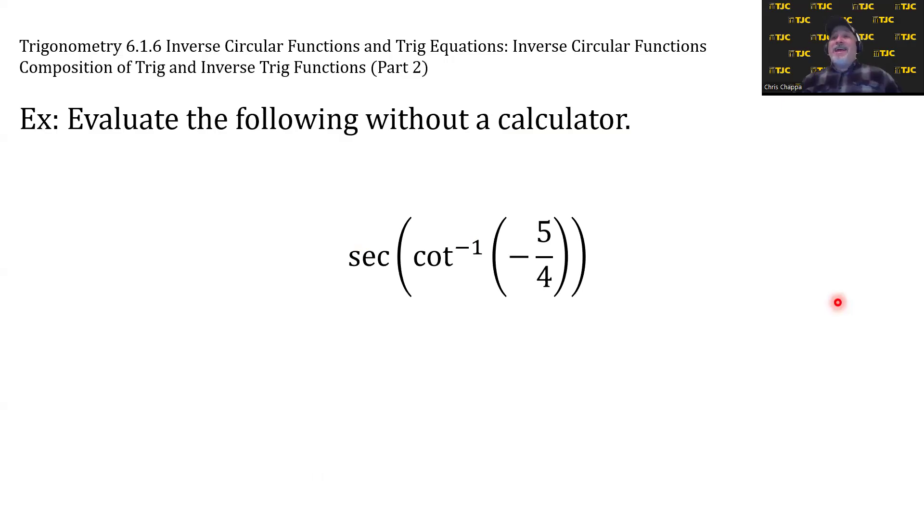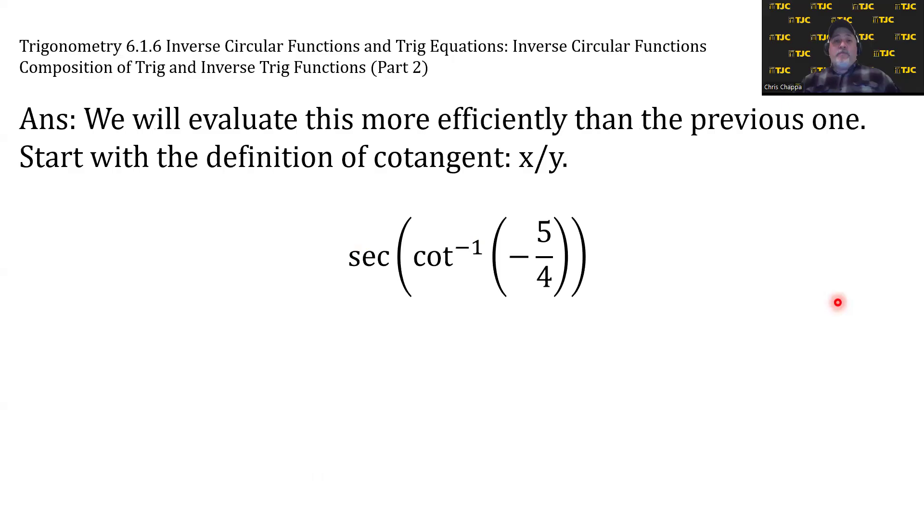Secant of cotangent inverse of negative 5 fourths. Now we have to pay attention to the quadrants. Why? Because when we disassemble the 5 fourths using the definition of cotangent, we have to determine who gets the negative, the 5 or the 4. Now, we will evaluate this more efficiently. Start with the definition of cotangent. Definition of cotangent is x over y. So x on top, y on bottom. Now let's think about quadrants.